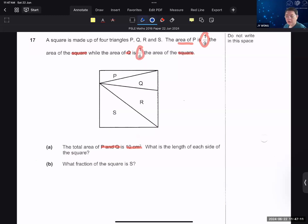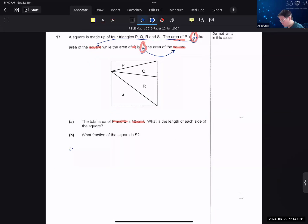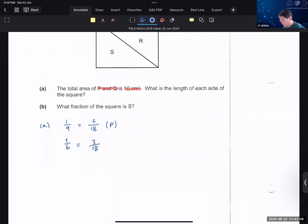This is kind of a repeated identity question. Your repeated identity is the square. So you look at the two denominators. You make them the same. So 1 out of 9 is the same as 2 out of 18, and 1 out of 6 is the same as 3 out of 18. So this is your P and this is your Q.